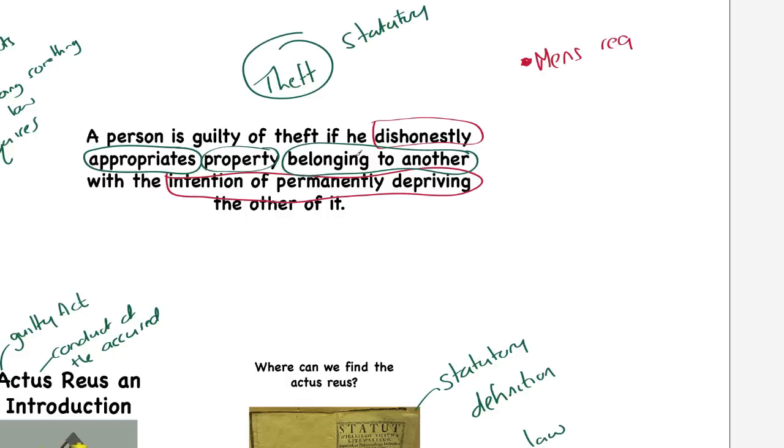As you can see from this definition, it clearly tells us there are two elements of mens rea—we'll look at mens rea in a subsequent video—but there are three elements of the actus reus. Our statute has provided us with a definition, and now we know where the actus reus elements are and where the mens rea elements are.